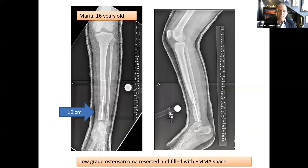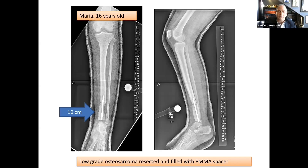Here's another example — a patient named Maria, who at the age of 16 developed pain in her distal leg and ankle and was diagnosed with a low-grade osteosarcoma. At stage 1, it was resected and filled with a PMMA spacer — a bone cement placed to maintain the defect until the definitive reconstruction can be done.